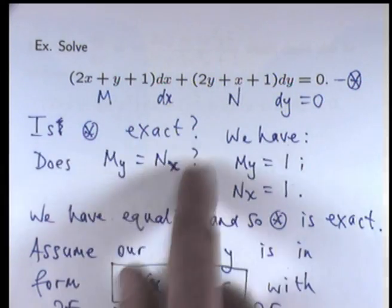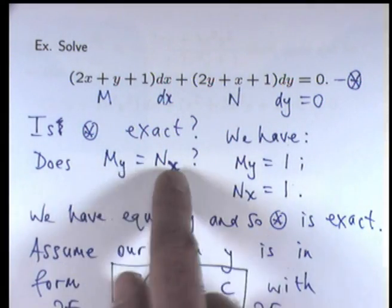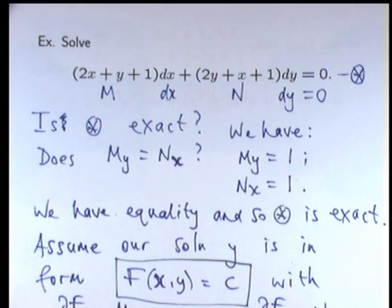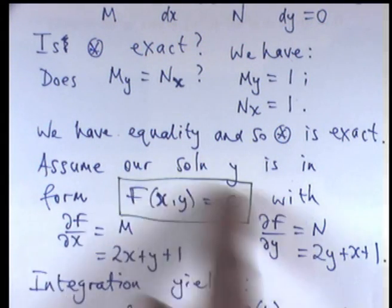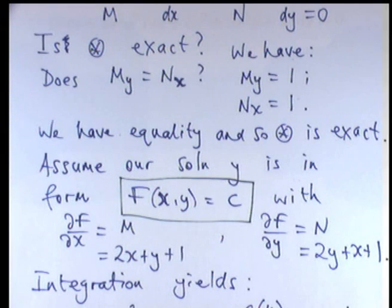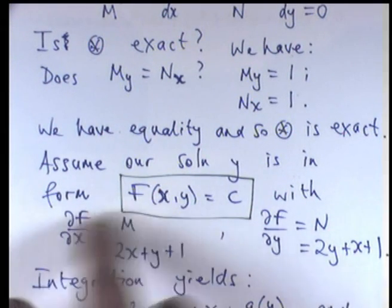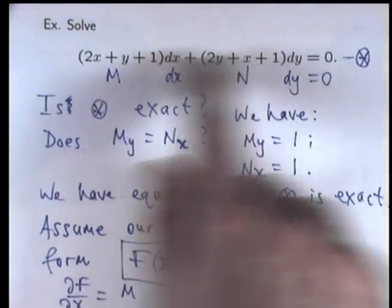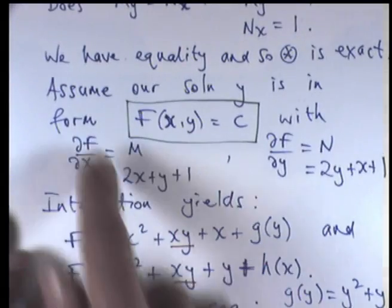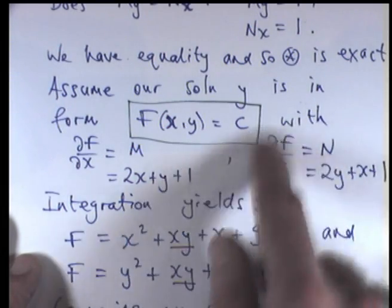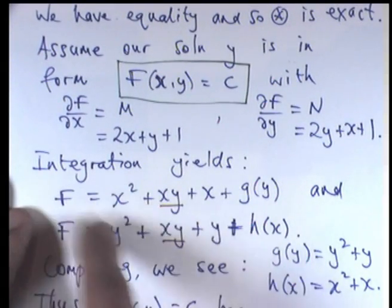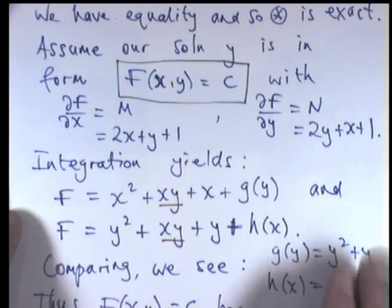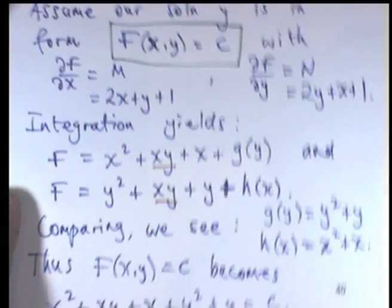The first very, very important step is to actually check to see that our problem really is exact. So, are these partial derivatives equal? If they are equal, then we can go ahead and assume that our solution, y, is implicitly defined within this bigger function, big F of two variables. We then look at the partials of F and set them equal to these functions here, these coefficients. From those two partial differential equations, we integrate both sides and then form two expressions for our big F. We compare, find our functions of integration, and then write down our particular solution.